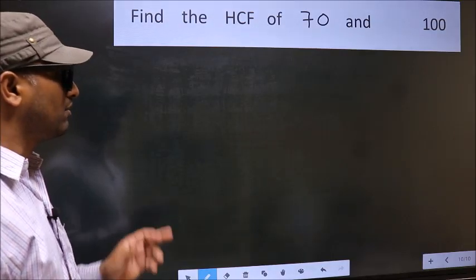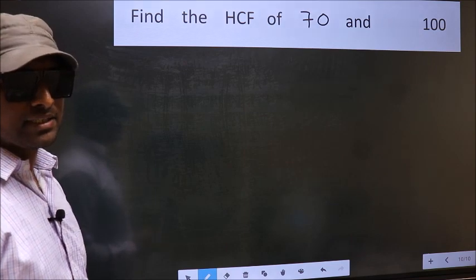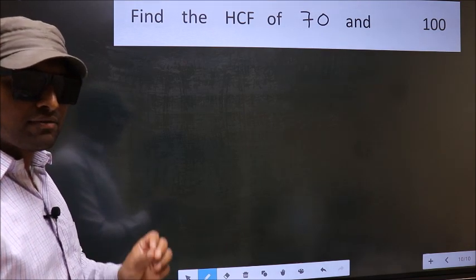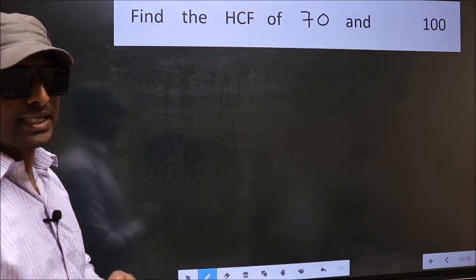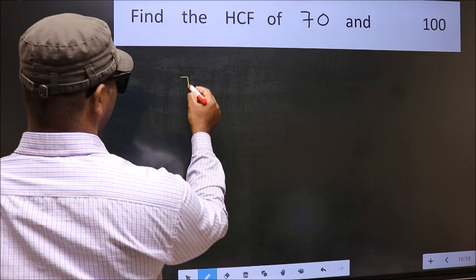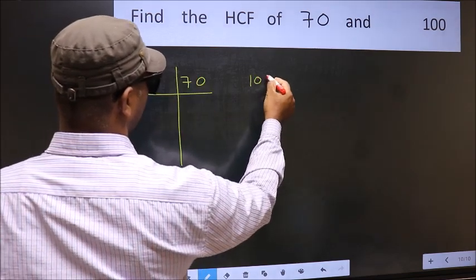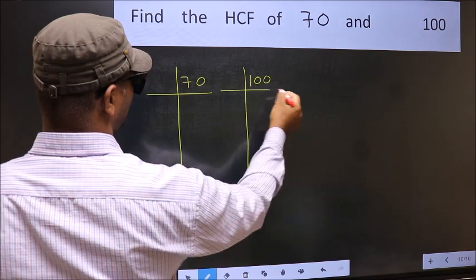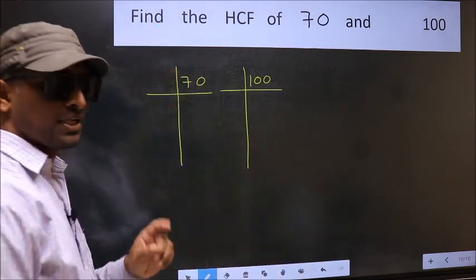Find the HCF of 70 and 100. To find the HCF, we should do the prime factorization of each number separately. What I mean is 70 and 100. This is your step 1.